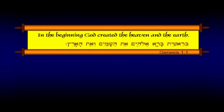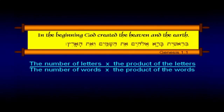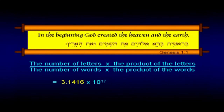Both Hebrew and Greek have the peculiar characteristic that every letter has a numerical value, and you can take advantage of that in interesting ways. If you take the number of letters in Genesis 1:1 and multiply that by the product of the letters, then divide by the number of words and the product of the words, you come up with 3.1416 — the value of pi more accurately than you probably used in school. The average person will say that's just a coincidence. Maybe — but I think it's a very unlikely coincidence.